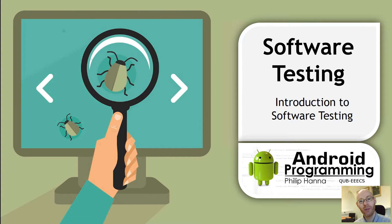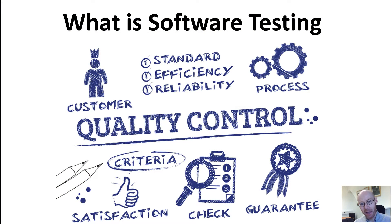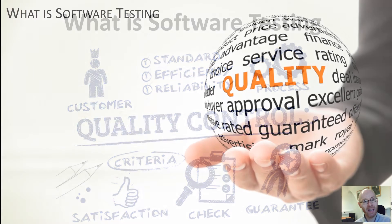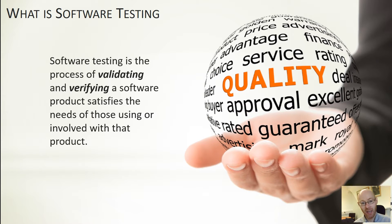In this video we're going to introduce software testing. We're going to look at what it is, the different types of software tests that we could introduce, and the different levels at which we could test our software. We'll start off with a broad definition of what software testing is. Software testing is the process of validating and verifying our software, and in particular that it satisfies the needs of those who are using or are going to use whatever it is we're developing.